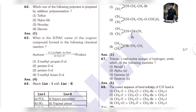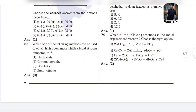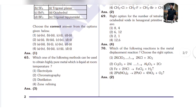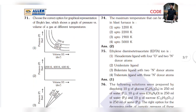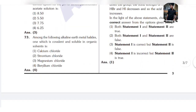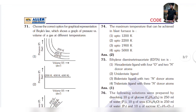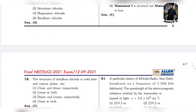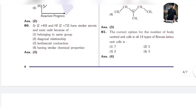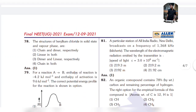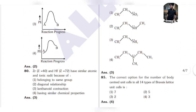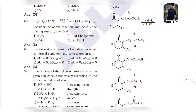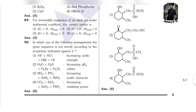62 is 1, 63 is 4, 64 is 1, 65 is 3, 66 is 1, 67 is 1, 68 is 2, 69 is 4, 70 is 2, 71 is 4, 72 is 3, 73 is 4, 74 is 2, 75 is 1, 76 is 1, 77 is 1, 78 is...